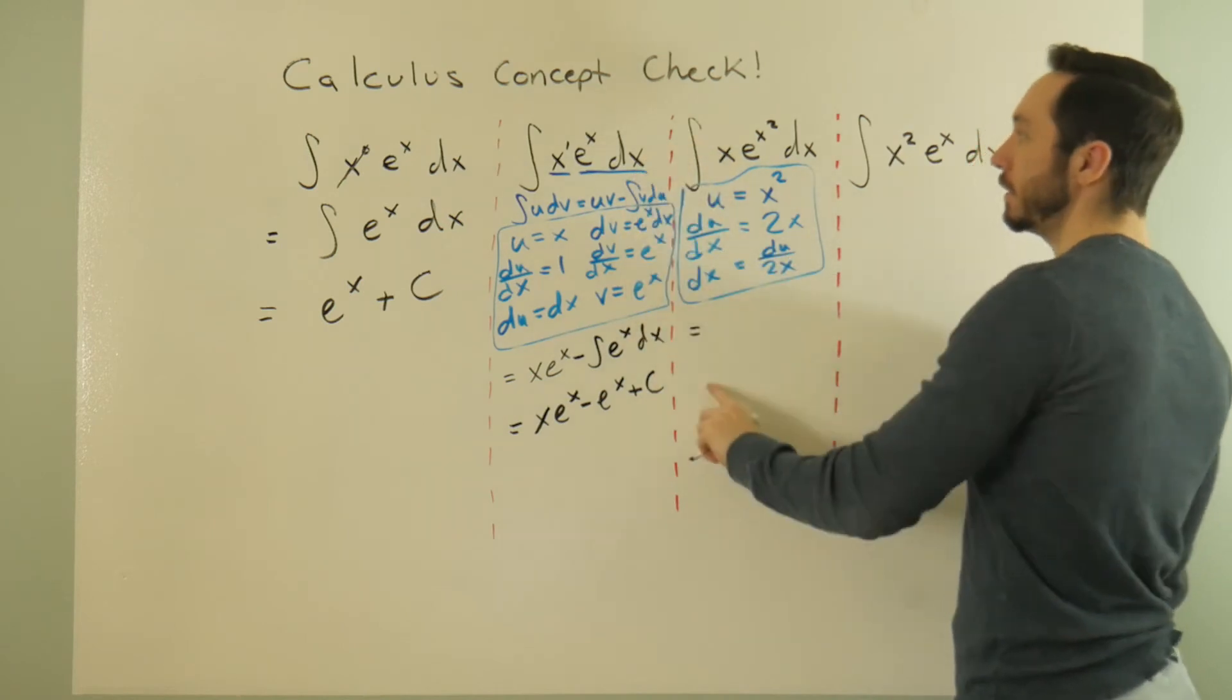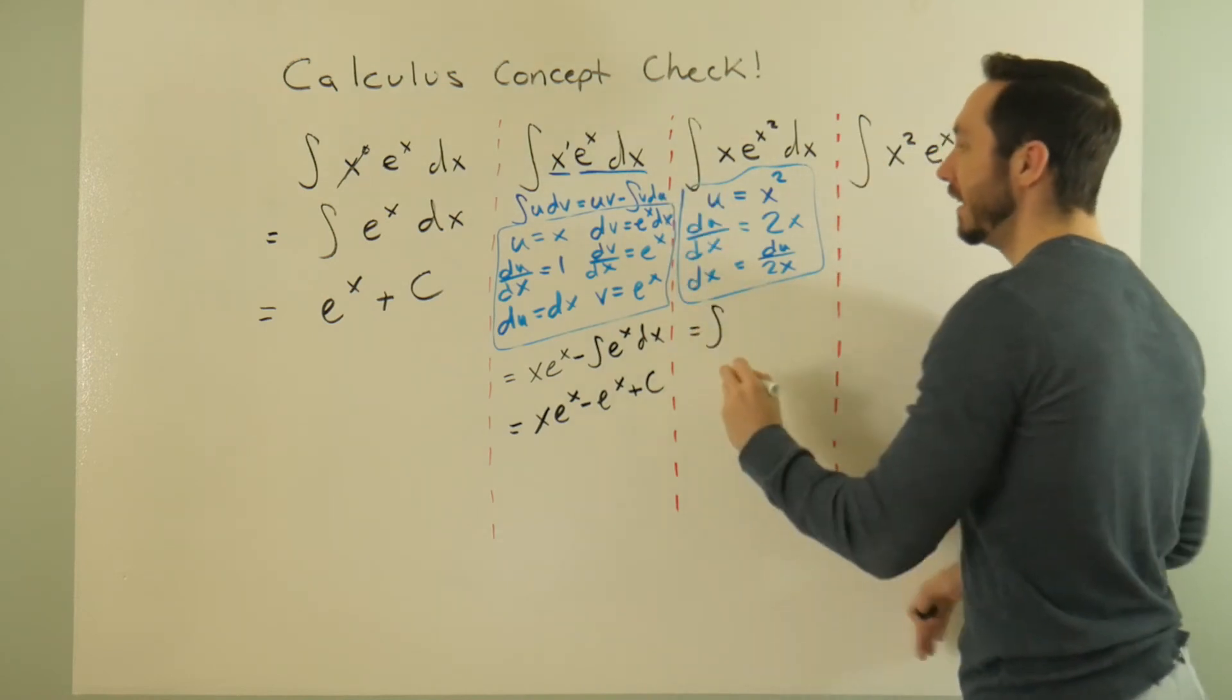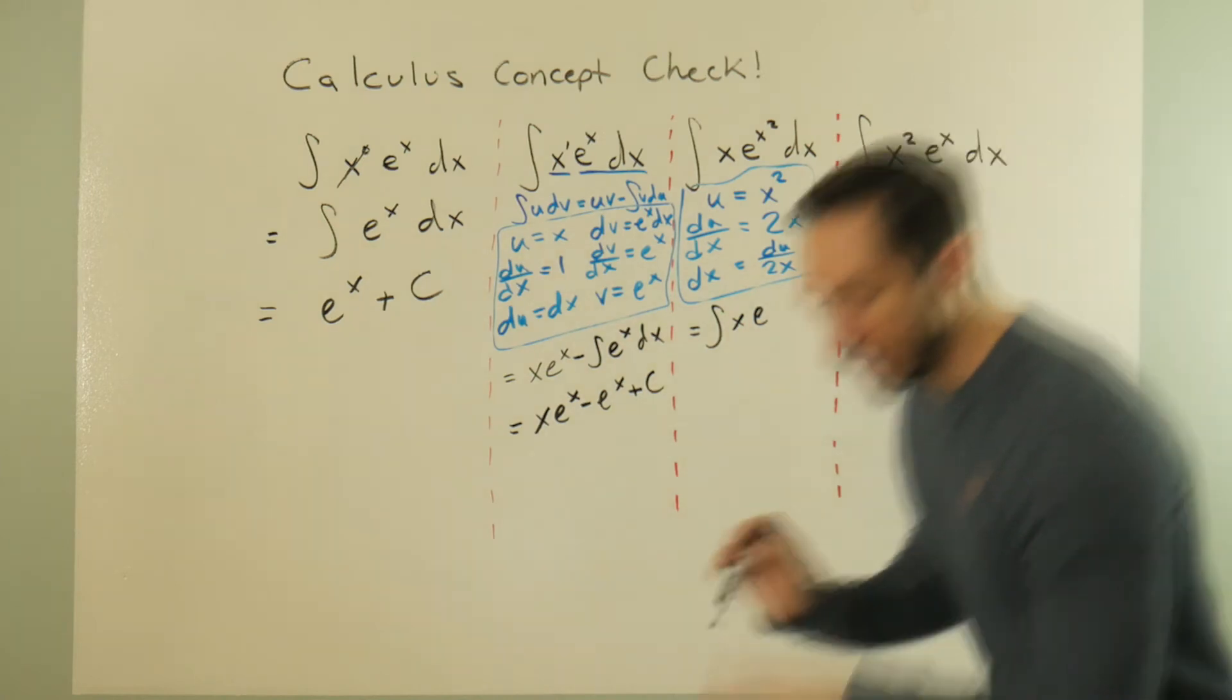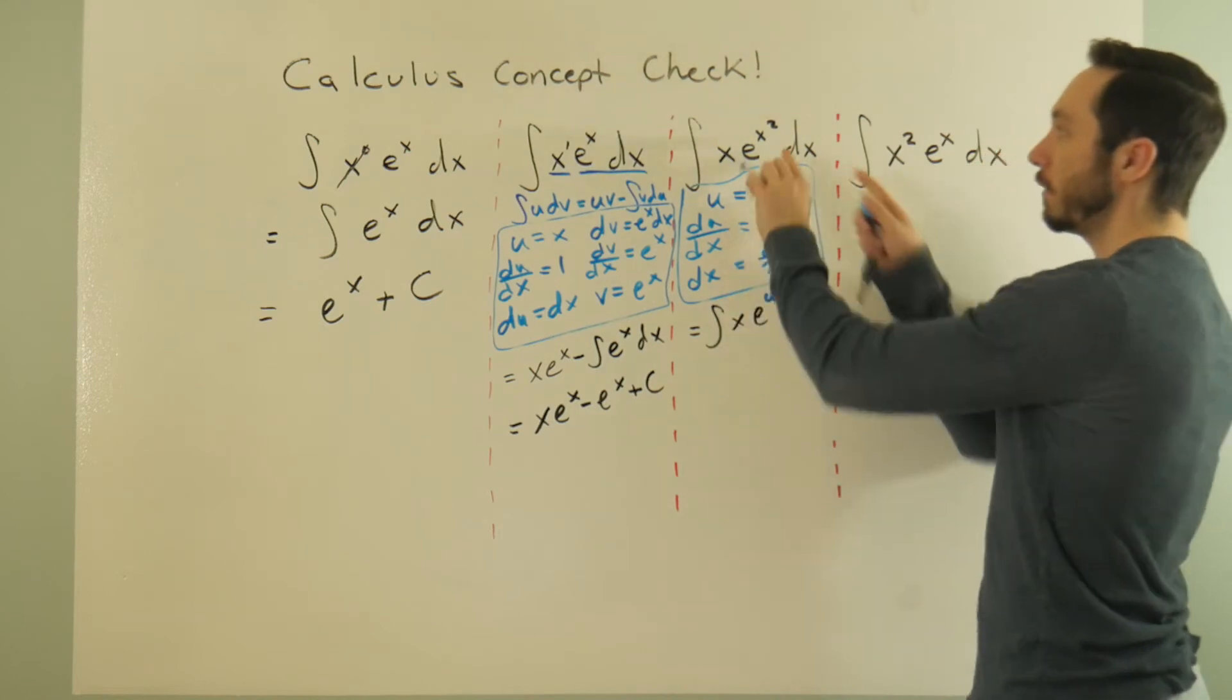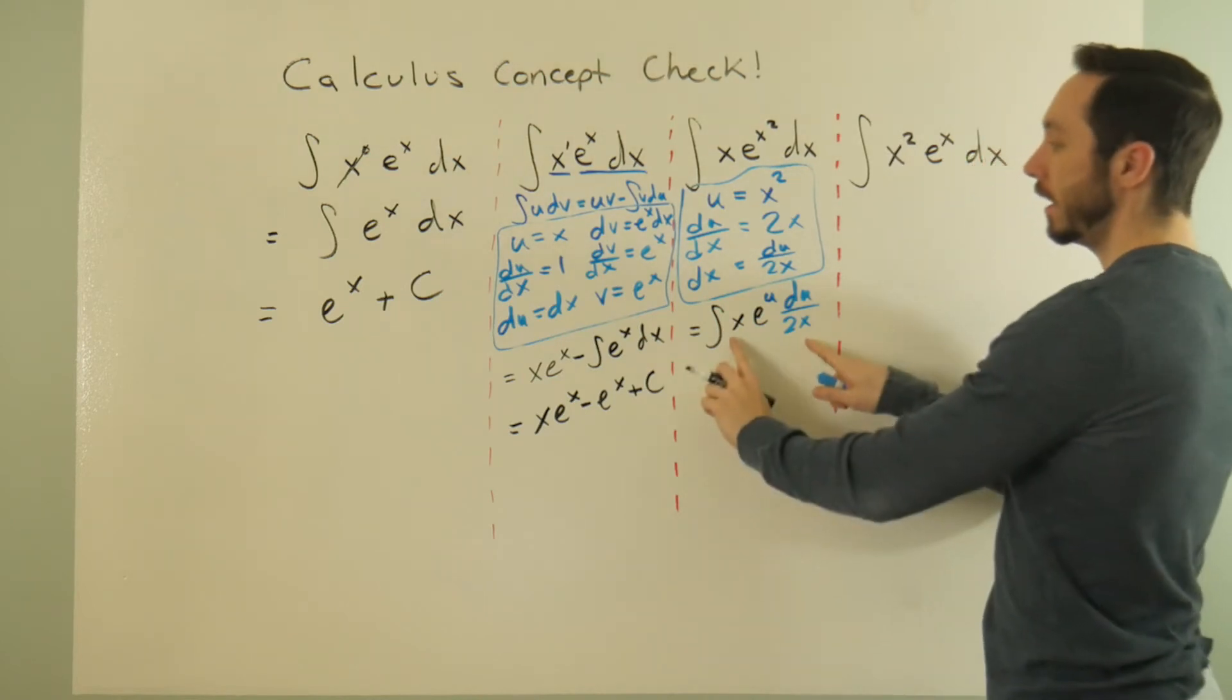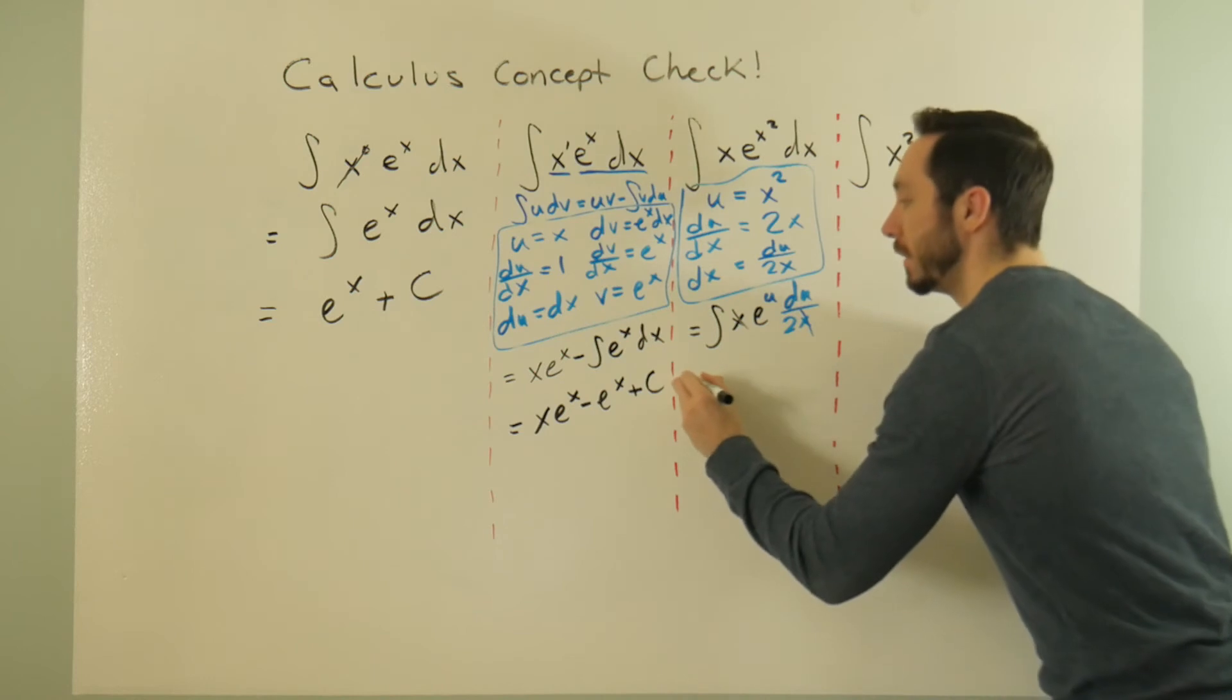What is this integral equal to? This is scrap work. It's still the integral - this x is still chilling here, this e is still chilling here. But what is x squared equal to? Well, based on my substitution I'm about to perform, it's equal to u. And then likewise, what is this dx equal to? Well because of this substitution, it's du over 2x.